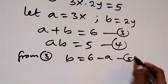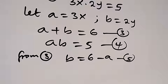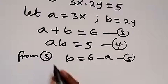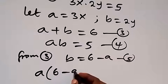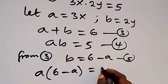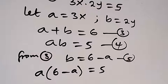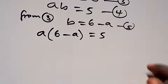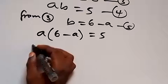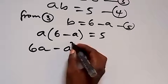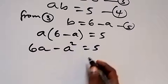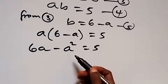Call this equation 5. Now substitute equation 5 into equation 4. Equation 4 becomes a times (6 minus a) equals 5. When we expand this, we have 6a minus a squared equals 5.